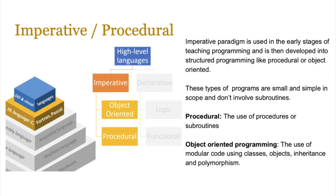For now we're going to look at imperative languages and the two main branches: object-oriented programming languages and procedural. The imperative paradigm is used in the early stages of teaching programming and is then developed into structured programming like procedural or object-oriented paradigms. We start with simple sequences of code, then introduce procedures and functions, and eventually classes and objects, inheritance, and polymorphism.